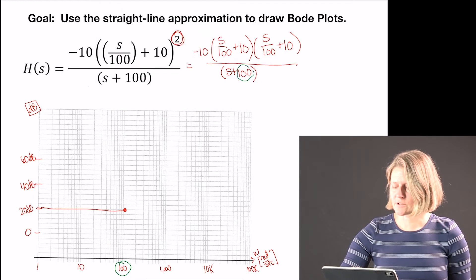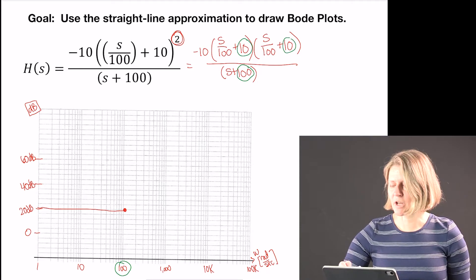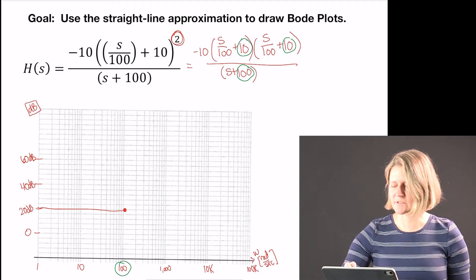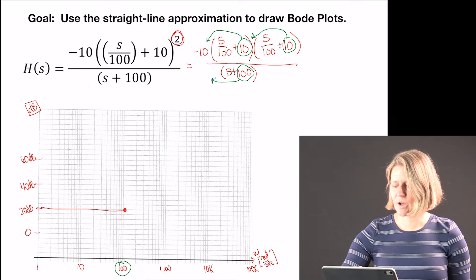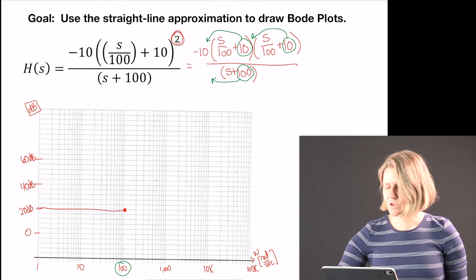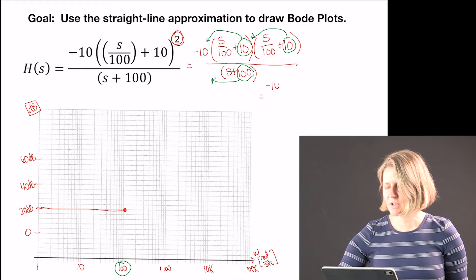In order to get this into standard form I need to get a 1 in each of these locations, which means I need to pull out the tens. And here I need to pull out that 100.